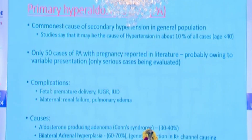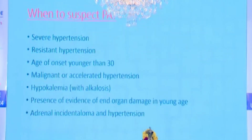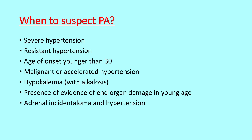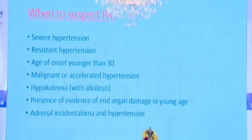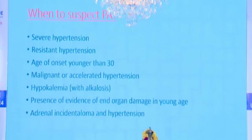Some cases can be because of genetic variation leading to potassium channel mutations. When should we suspect primary hyperaldosteronism? In case there is severe hypertension, resistant hypertension, age of onset younger than 30, malignant or accelerated hypertension, hypertension associated with hypokalemia and alkalosis, evidence of target organ damage at a young age, or if during evaluation we find adrenal incidentaloma with hypertension.